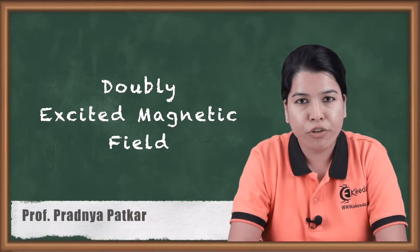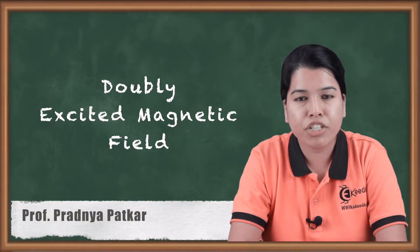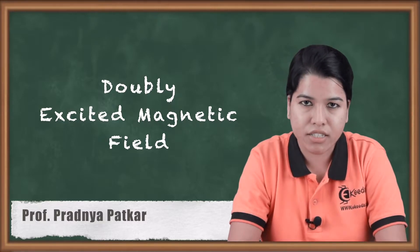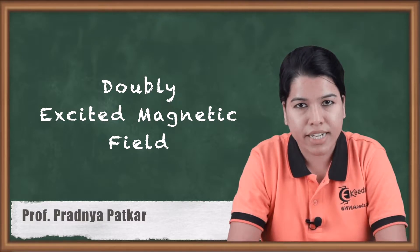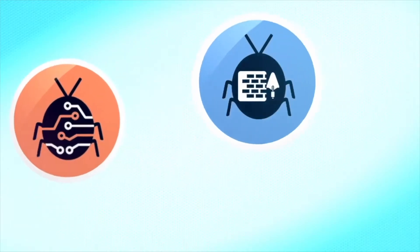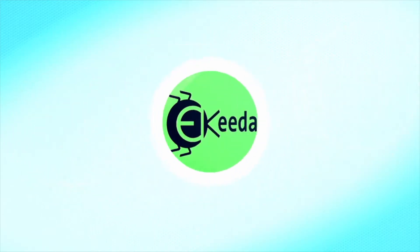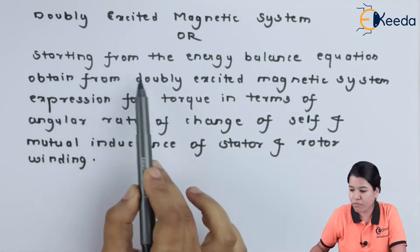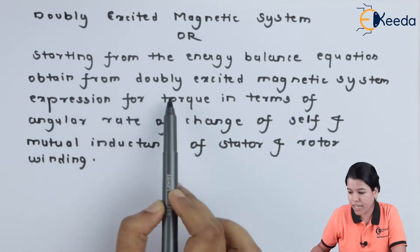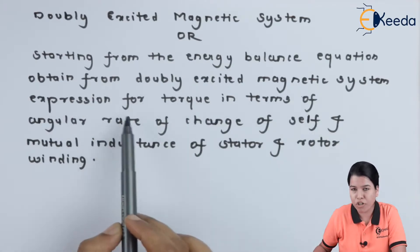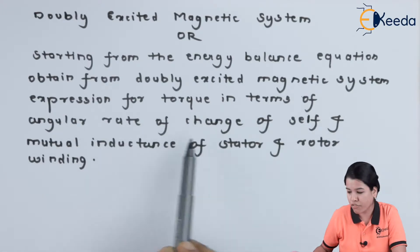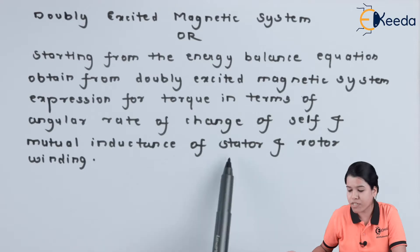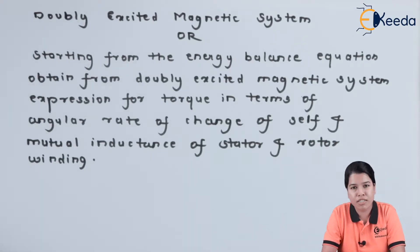Hello friends. In the previous video we studied and derived the equation for torque in the singly excited magnetic system. In this video we are going to study the doubly excited magnetic system. In an exam, the question for the doubly excited magnetic system can also be asked as: starting from the energy balance equation, obtain the expression for torque in terms of angular rate of change of self and mutual inductance of stator and rotor winding.